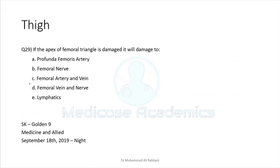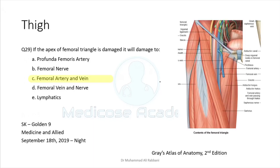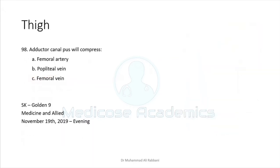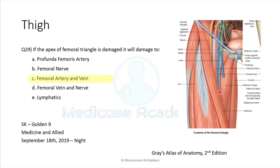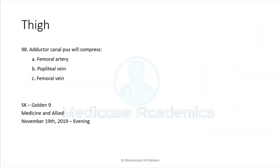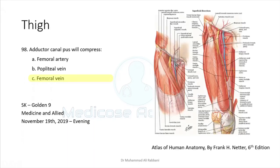All triangles and fossae of the lower limb are frequently asked — femoral triangle, femoral sheath, adductor canal, and popliteal fossa. The apex of the femoral triangle contains the femoral artery and femoral vein. In the adductor canal, both the femoral artery and femoral vein are present. When pressure is raised, veins are compressed first due to their lower pressure, so the femoral vein would be compressed first.